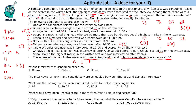Gopal scored the highest marks and was interviewed after Chavi. Since Ananya is at 10:30, Chavi must come after her. Both Gopal and Fagun must be interviewed after Chavi. This means Chavi is at 11 AM, and Fagun and Gopal fill the remaining slots. Chavi is an electrical engineer scoring 93.